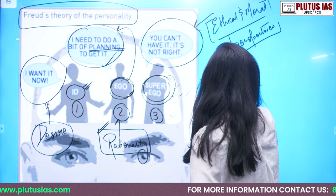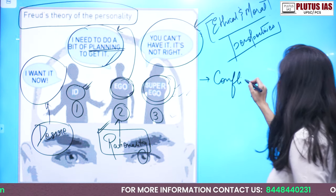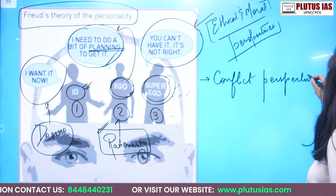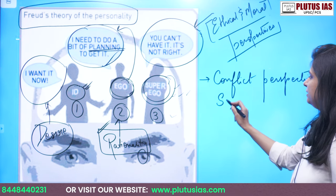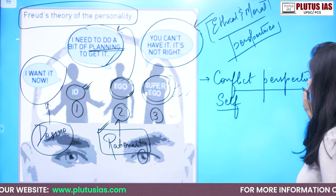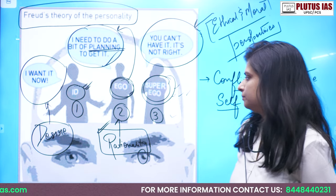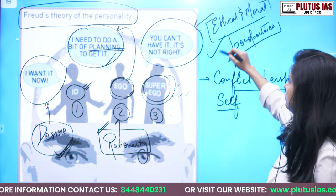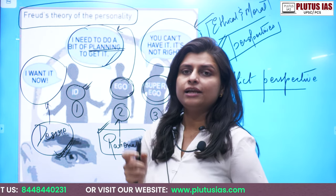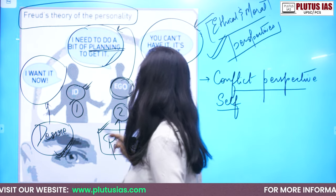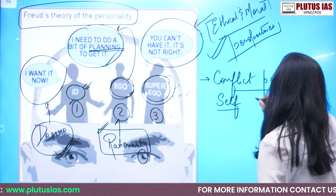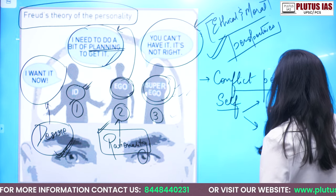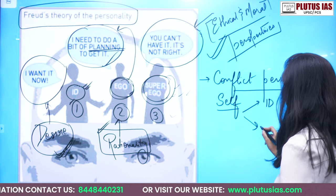What is that conflict? There is a desire, and then there is a moral and ethical perspective. So there shall always be a conflict between ID and super ego. This conflict perspective shall always exist in the self — a conflict between ID and super ego.